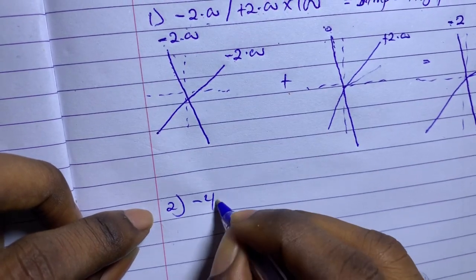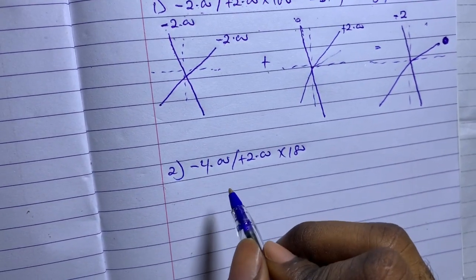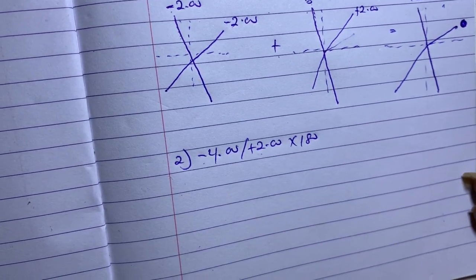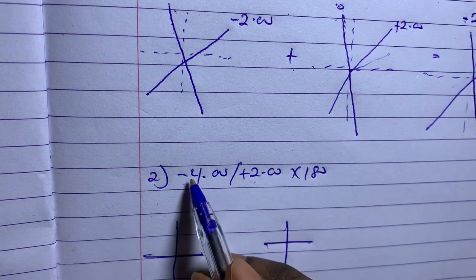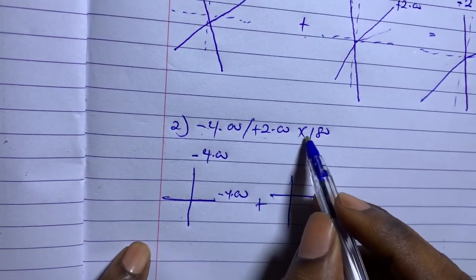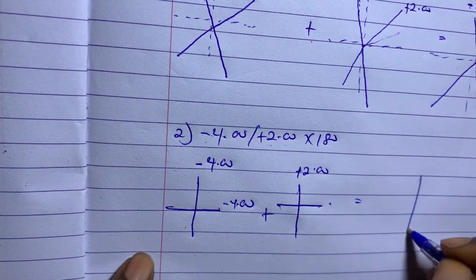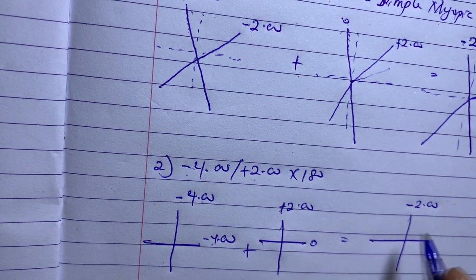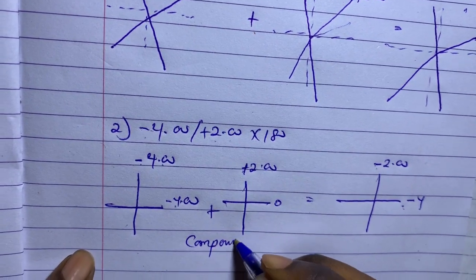Example two: minus four combined with plus two axis 180. We must determine whether it is compound hyperopic, mixed, or whatever — and again we always draw the optical cross. For the sphere, minus four appears along all meridians — minus four here and minus four here. For the cylinder, plus two axis 180 means the power is at 90. So I place plus two at 90. On my final cross: minus four plus two gives minus two, and minus four plus zero gives minus four. I have minus on both meridians, so this becomes compound myopic astigmatism.